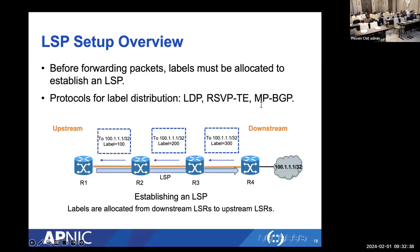To establish an LSP for each destination, MPLS routers along the path exchange label information — similar to how routing protocols exchange routing information. Common protocols used for label distribution include LDP (Label Distribution Protocol), RSVP-TE (Resource Reservation Protocol with Traffic Engineering extension), and MP-BGP (Multi-Protocol Border Gateway Protocol), which is an extension of BGP to support advertising MPLS labels. Labels are typically allocated from downstream routers to upstream routers.